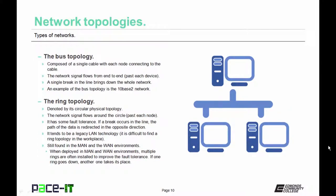The first topology is the bus. This is where a network segment is composed of a single cable, with each node connecting to that cable. The network signal flows from end to end past each device. A single break in the line will bring down the whole network. An example of the bus topology is the 10 base 2 network. Hopefully you won't see that anymore, but that is an example of the bus topology.